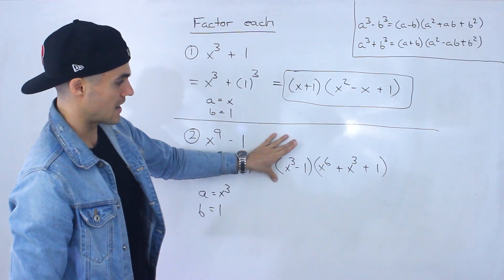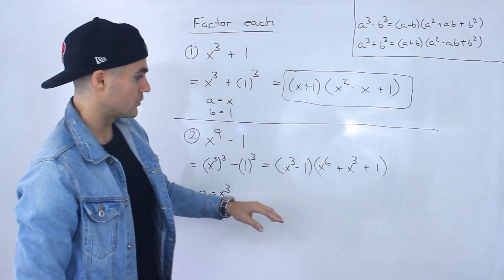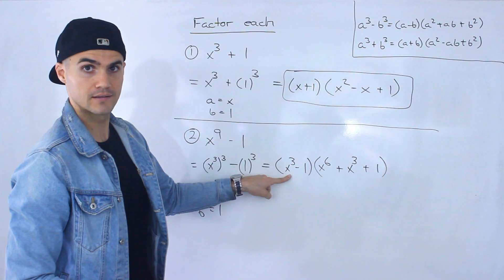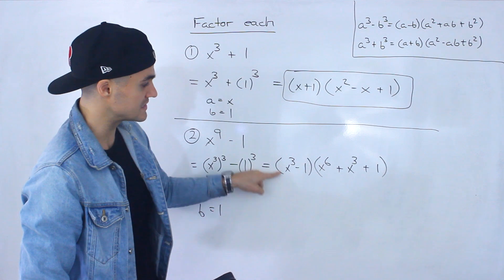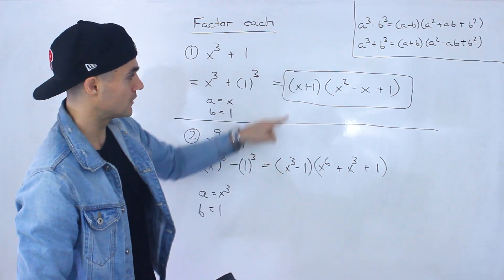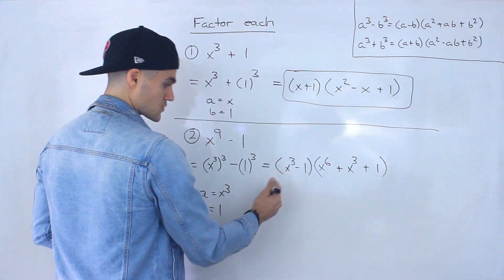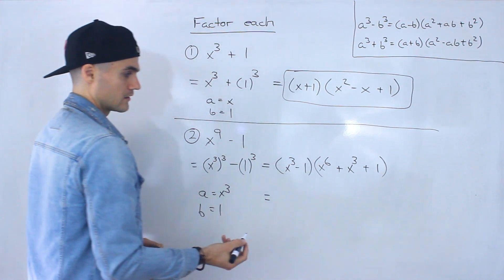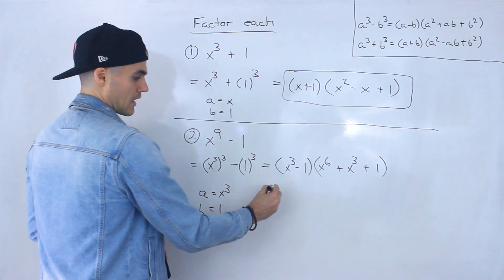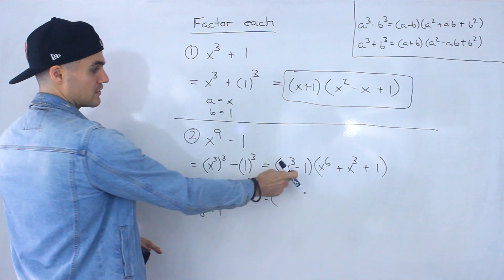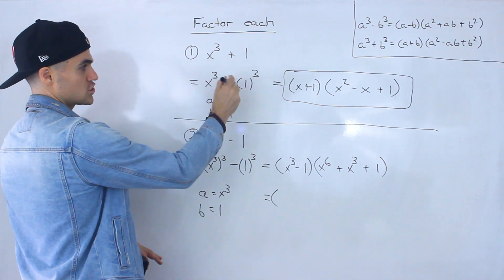But are we done at this step? We know this second bracket can never factor further, but you always want to check if the first bracket can factor further, because sometimes it will. In this case, notice that we still have a difference of cubes in x to the power of three minus one. Notice x plus one can't factor further, but x to the power of three minus one — that's a difference of cubes — can factor further.